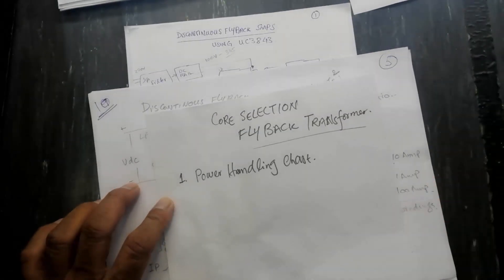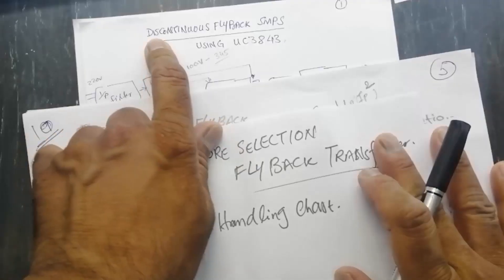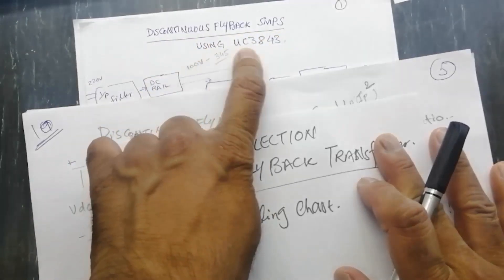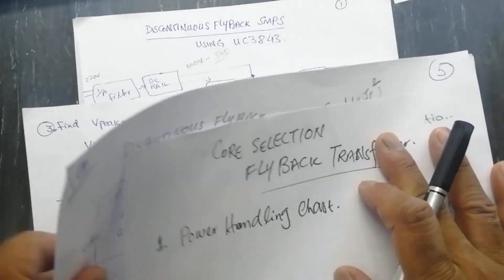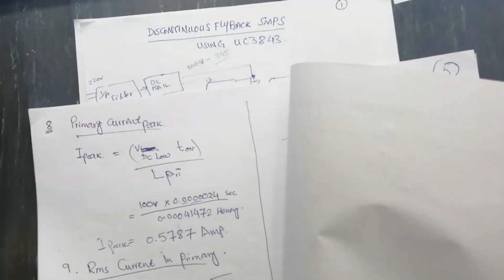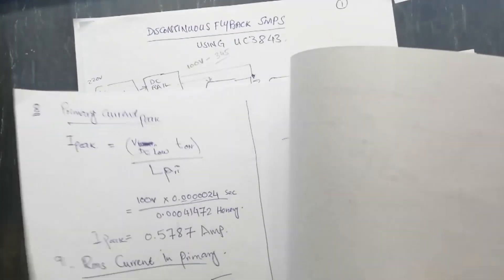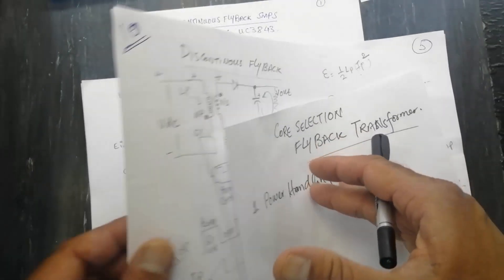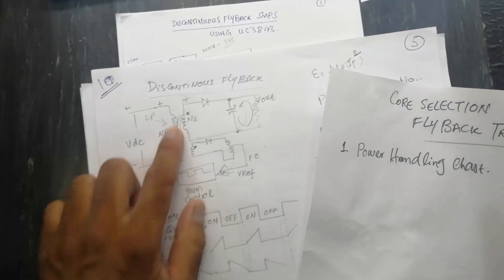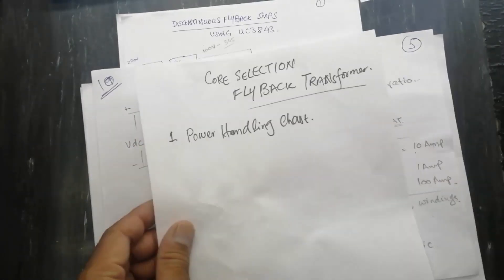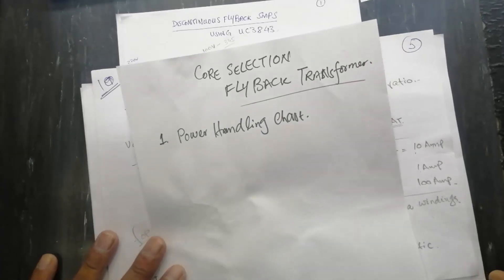Assalamu alaikum wa rahmatullahi wa barakatuhu. Welcome to Hashiro Electronics. In this series on discontinuous flyback SMPS using the UC3843 IC and making a discontinuous flyback transformer, we calculated DC, primary current, and inductance values in the last video. We discussed what a discontinuous flyback transformer is, and now we move on to transformer design.